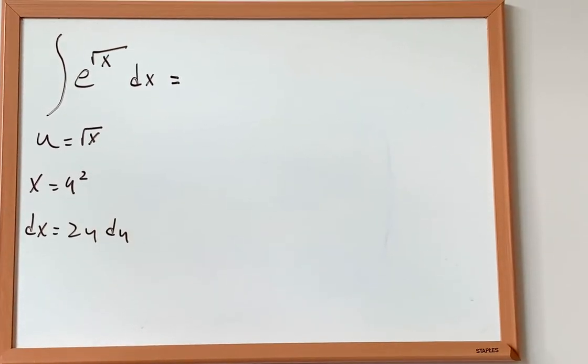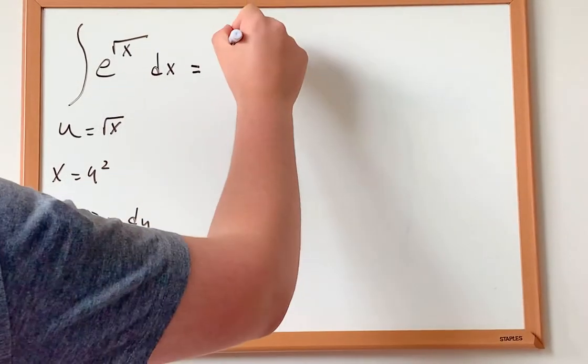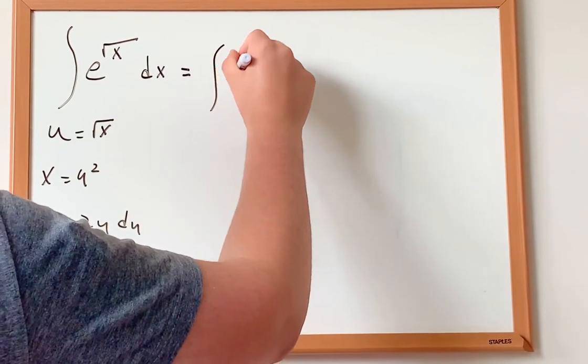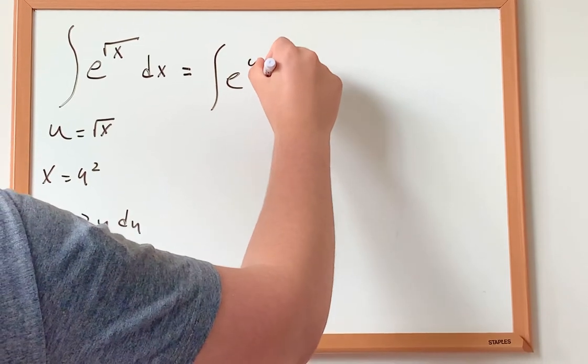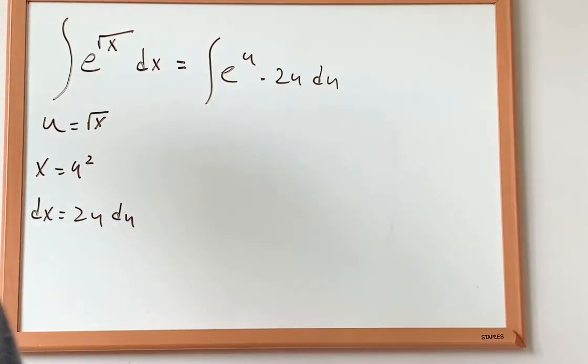And now we can just use the substitution that we had. So we get the integral of e to the power of u multiplied by 2u du.